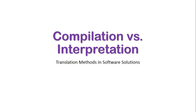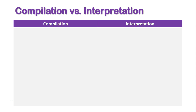We're now going to take a quick look at comparing compilation to interpretation as translation methods and software solutions. We have a table set up here and we're just going to look at them both side by side — how they're similar, how they're different, and the advantages and disadvantages of each.